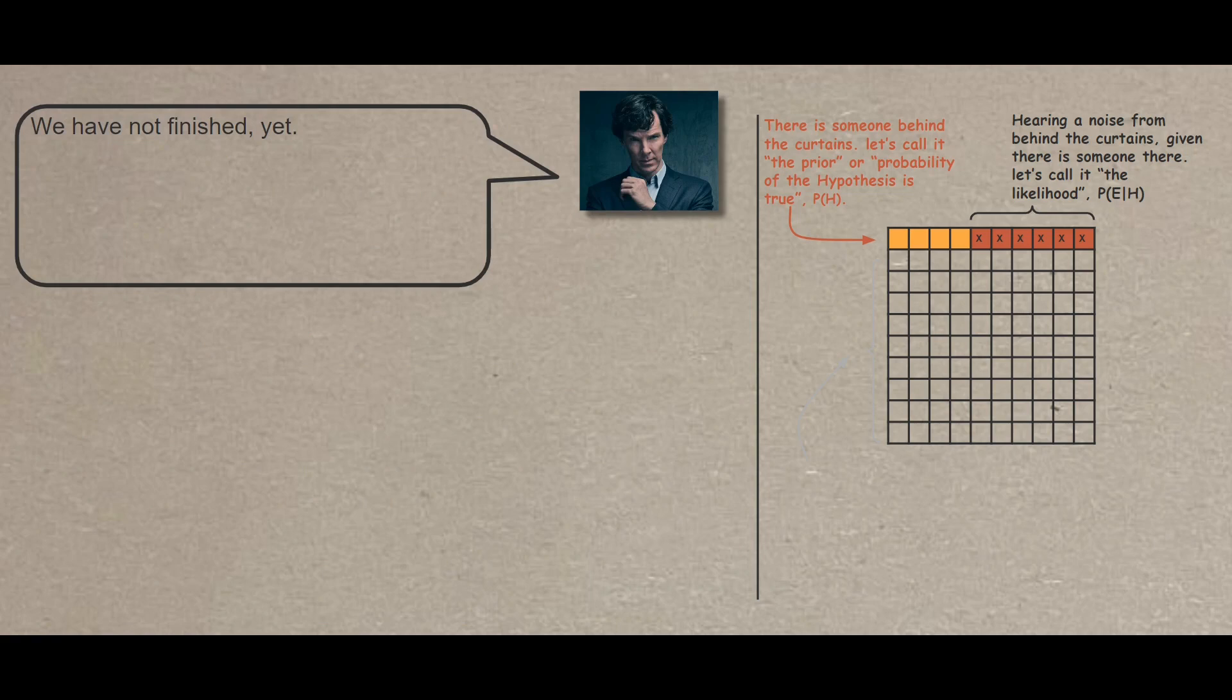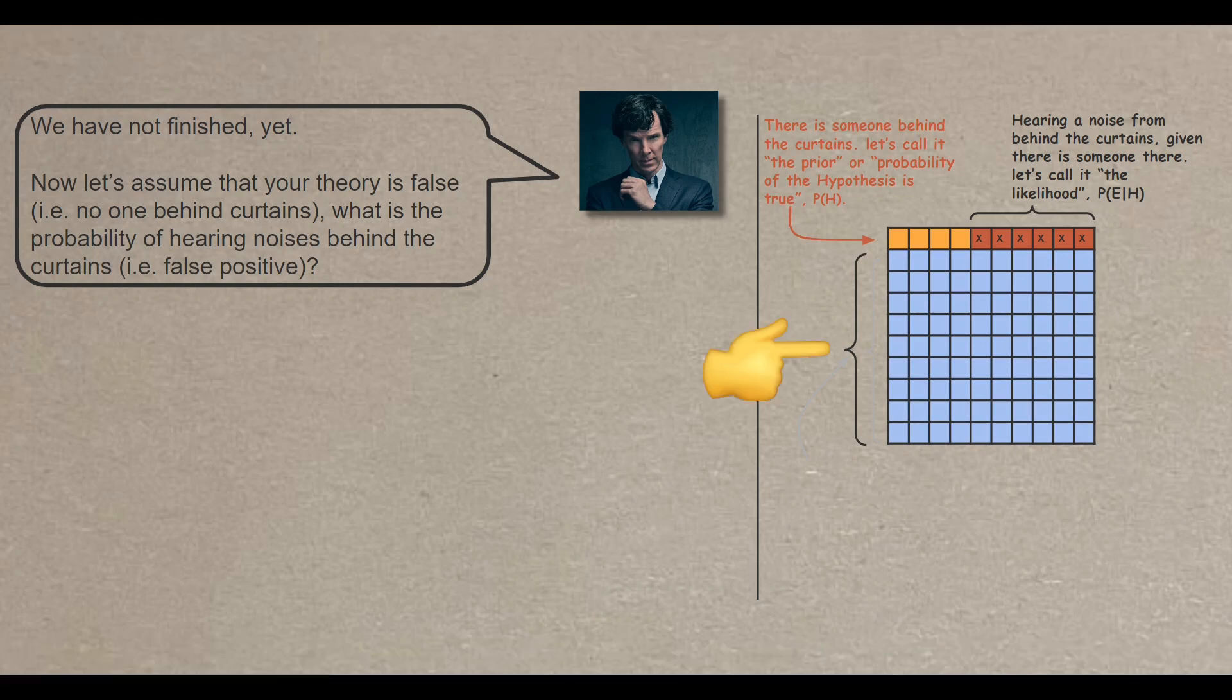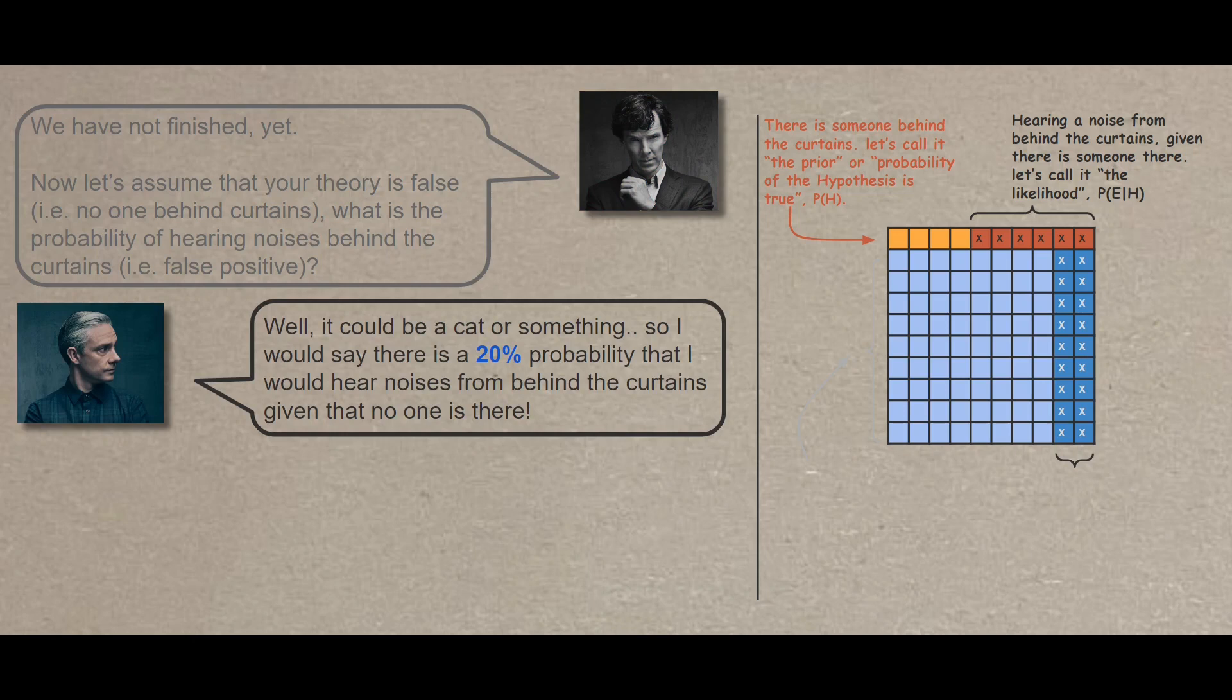Now, let's assume that your theory is false, like no one behind the curtains. What is the probability of hearing noises behind the curtains? Like false positive. What Sherlock tries to say is that let's assume that we are wrong and there is no one behind the curtains. Given that, what is the probability of us hearing noises from behind there? And Watson replies, it could be a cat or something. So I would say there is 20% probability that I would hear noises from behind the curtains, given that no one is there.